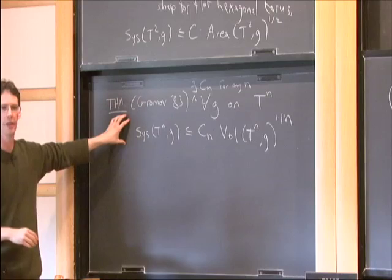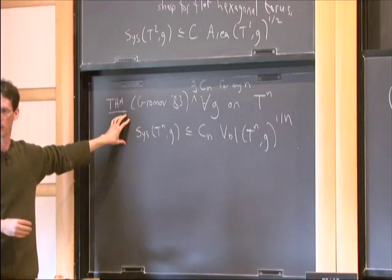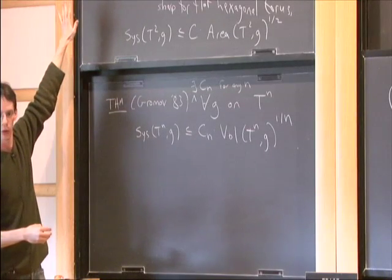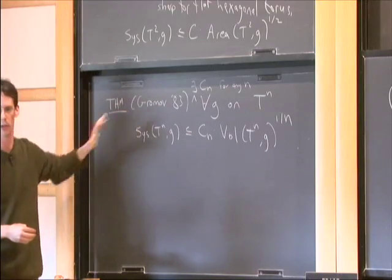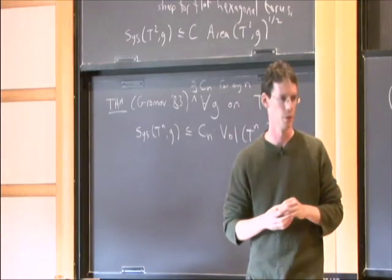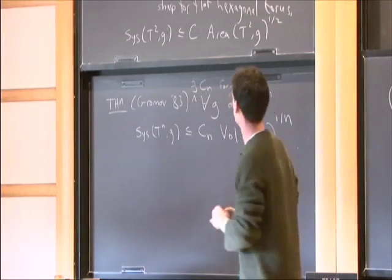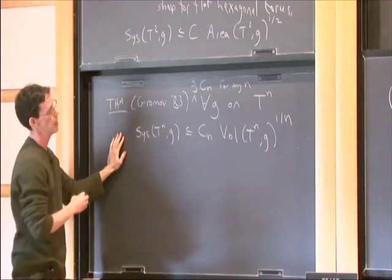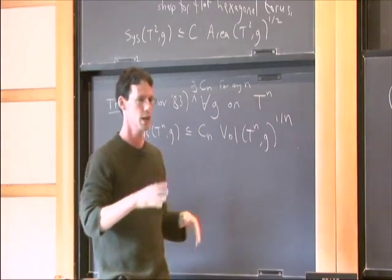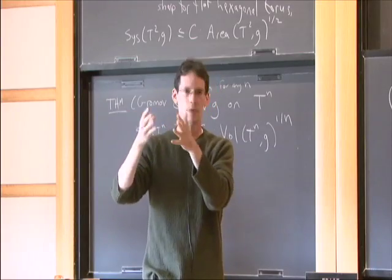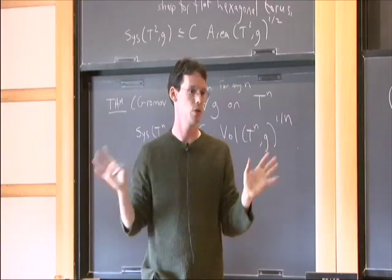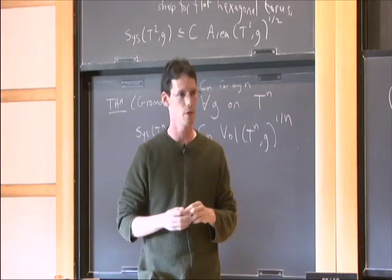This is the main theorem of systolic geometry, and it's the central theorem I'll discuss throughout. There's a big gap between the late 40s when the two-dimensional case was done and the 80s when the higher-dimensional case was resolved. What's striking about both theorems is that there are no restrictions on the metric G — no curvature conditions. It's for absolutely any metric G, and there aren't many theorems that hold in this generality with any trickiness.